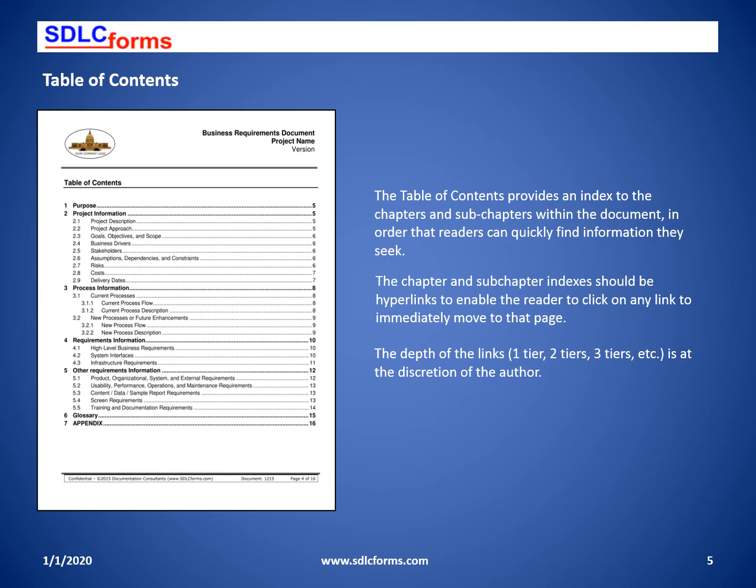The table of contents allows people to quickly determine the scope and volume of the document and find topics and subtopics of interest to them by clicking on that topic to move to the desired page.